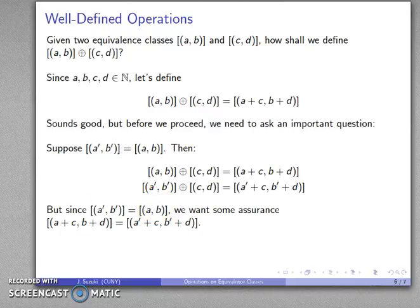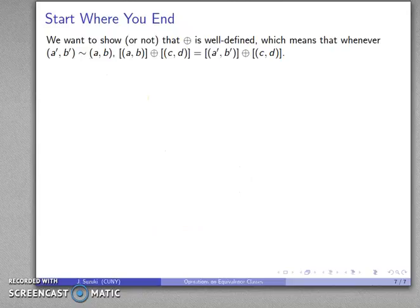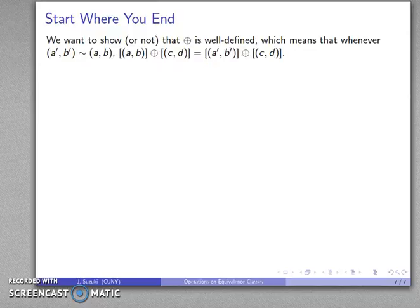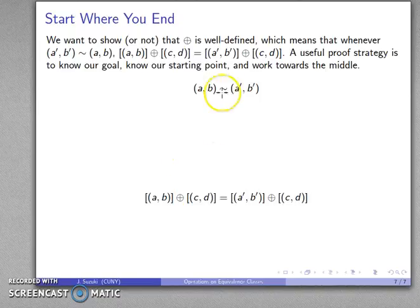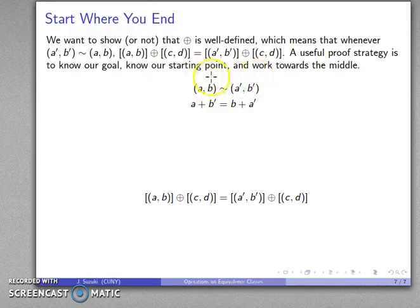If I represent the same equivalence class in a different way, I want to make sure the sum doesn't change. A good proof strategy is to know the goal — show that the two sums are the same — and know the starting assumption: that the two representations are equivalent. Then work from both ends toward the middle. From our assumption that (A,B) ~ (A',B'), the definition of the equivalence relation gives us A + B' = B + A'.